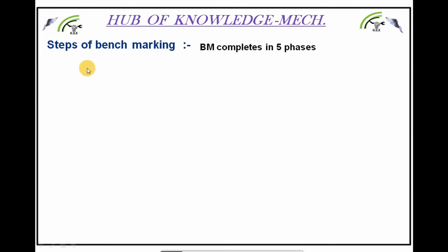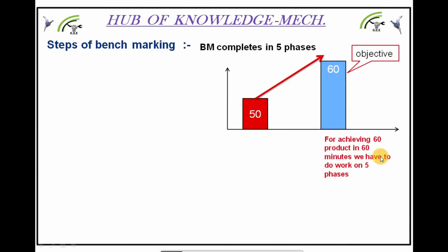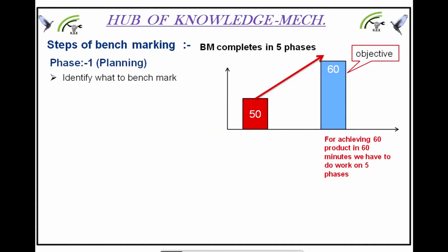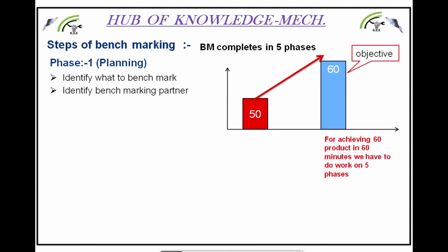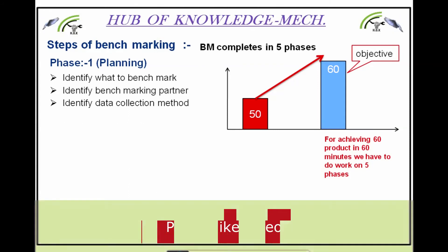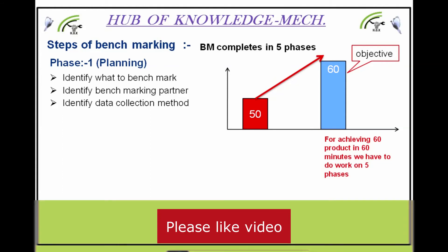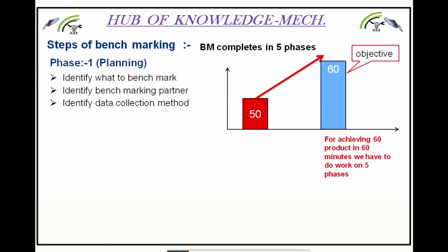Now let's discuss the steps of benchmarking. Benchmarking completes in five phases. To achieve 60 products in 60 minutes, Phase 1 is Planning. In planning, we identify what to benchmark — what objective to set. Next, identify the benchmarking partner — who we are competing with. Next, identify the data collection method — which technique or method to use for collecting data.